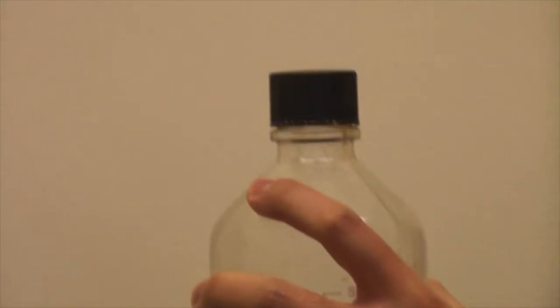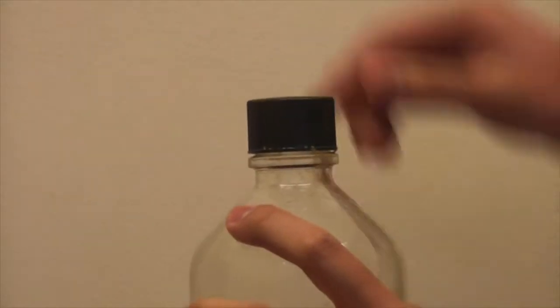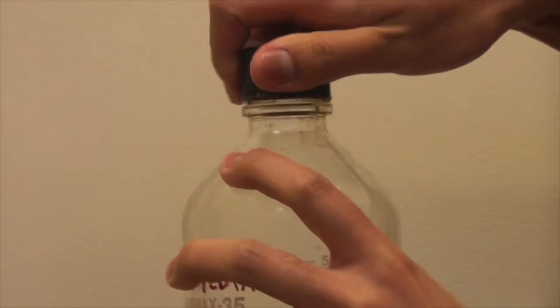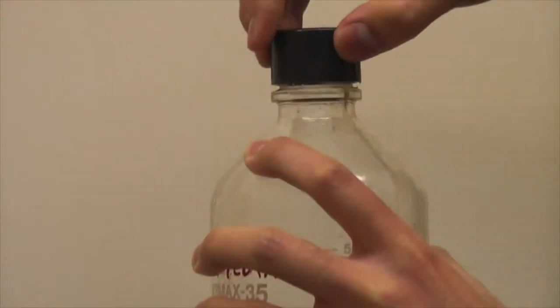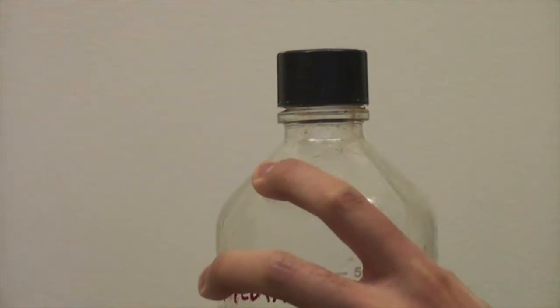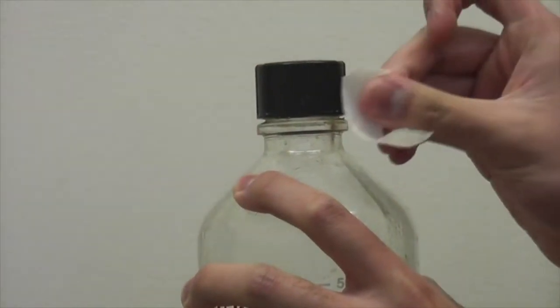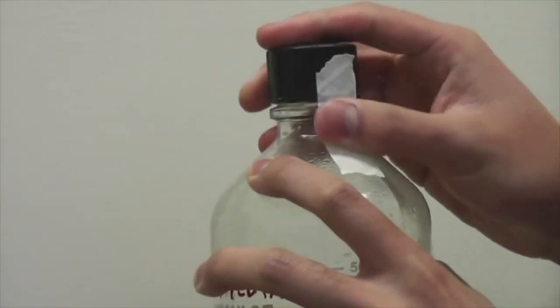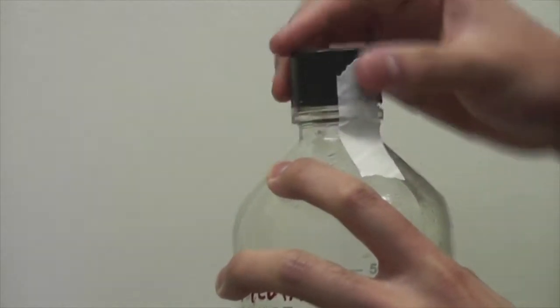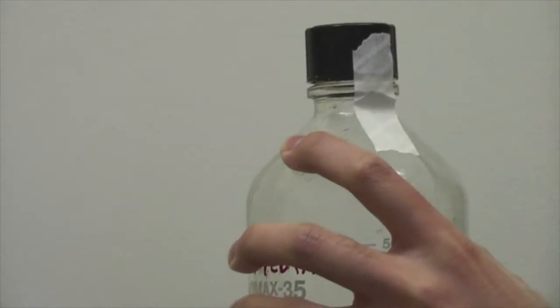When autoclaving liquids, ensure that the cap is not tightly screwed on. Do this by completely closing the lid to the bottle, then opening the lid on the bottle a quarter turn. Ensure that autoclave tape is placed on the bottle. More information on autoclaving and sterilization can be found in another Jove Methods video, Sterilization and Autoclaving.